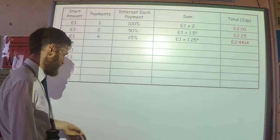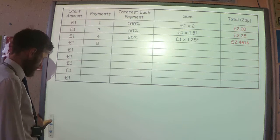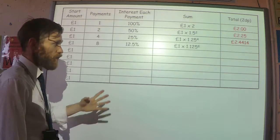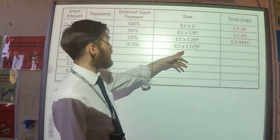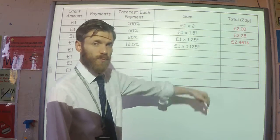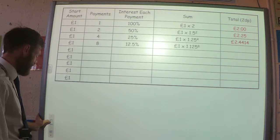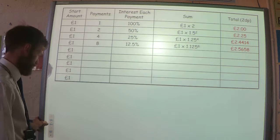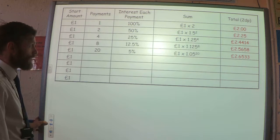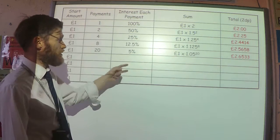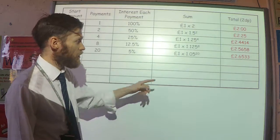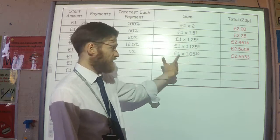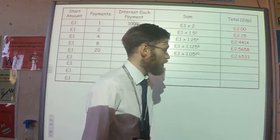That's slightly better. What about if I have eight payments of 12.5%? A 12.5% increase gives a multiplier of 1.125 to the power of eight, because I'm having eight installments — I get just under £2.57. What about 20 payments of 5% each? The multiplier would be 1.05 to the power of 20, and I get £2.65.